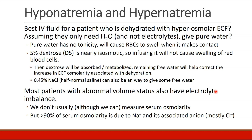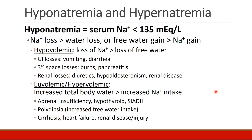We could measure a patient's serum osmolarity, although we often don't. But since almost all of serum osmolarity is due to sodium and its associated anion, which is usually chloride, a standard chemistry panel tells us a lot of information about a patient's osmolar state. So let's focus on the two most common causes of hyper- and hypo-osmolarity, which are hypo- and hypernatremia.